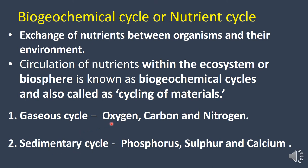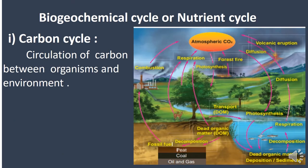The gaseous cycle includes oxygen, carbon, and nitrogen — these circulate as gases such as carbon dioxide. The sedimentary cycle includes phosphorus, sulfur, and calcium, because these elements are found in sediments. So their circulation is called the sedimentary cycle. An example of a gaseous cycle is the carbon cycle.